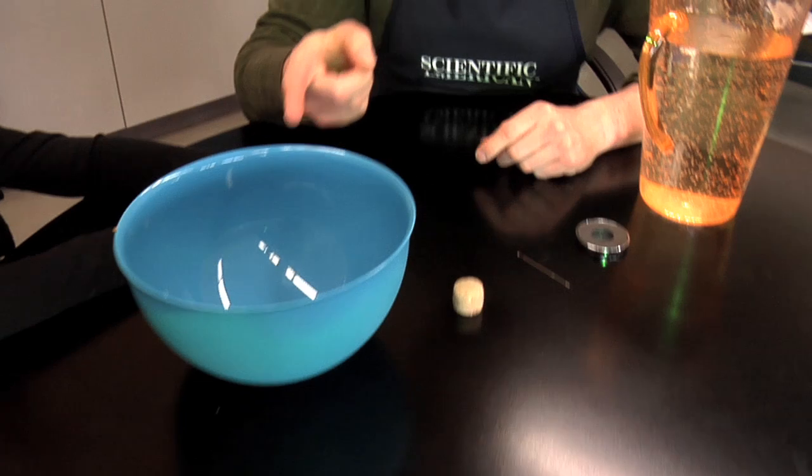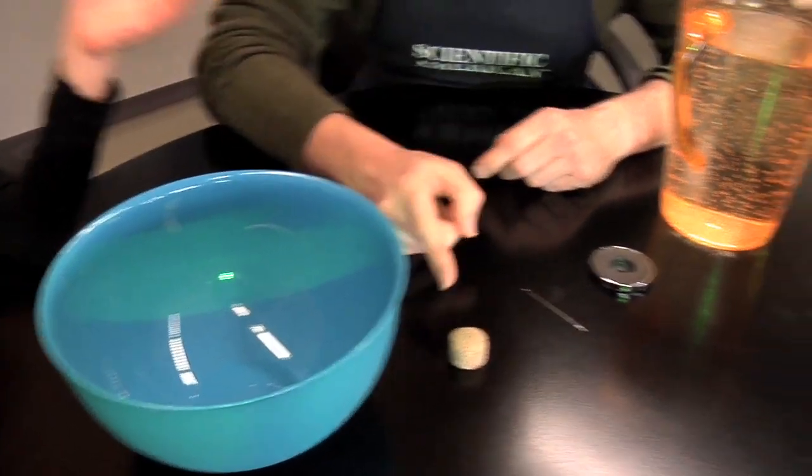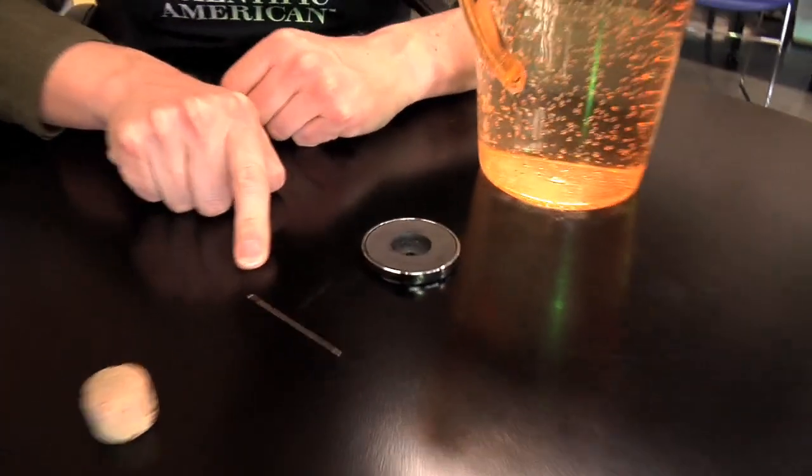For this project, you're going to need the following items: a plastic bowl, a cork, a sewing needle, a magnet, and last but not least, some water.